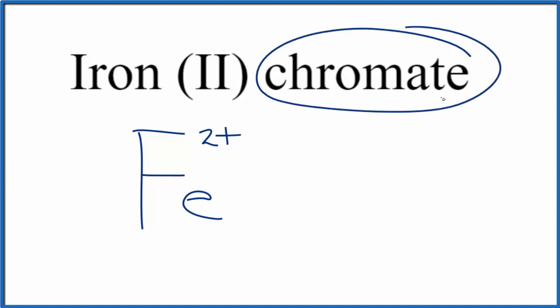For chromate, you won't find this on the periodic table. This A-T-E, that means it's a polyatomic ion.